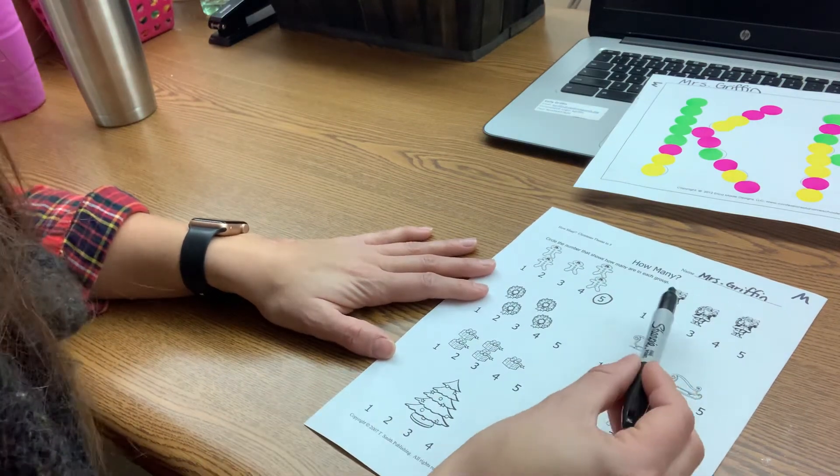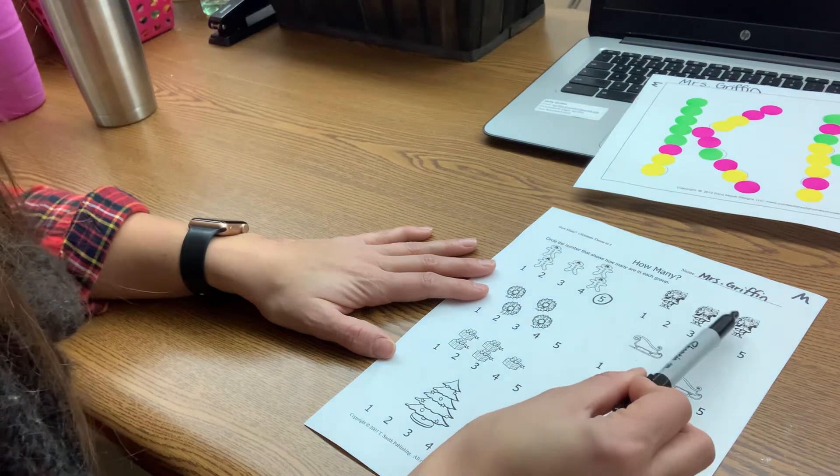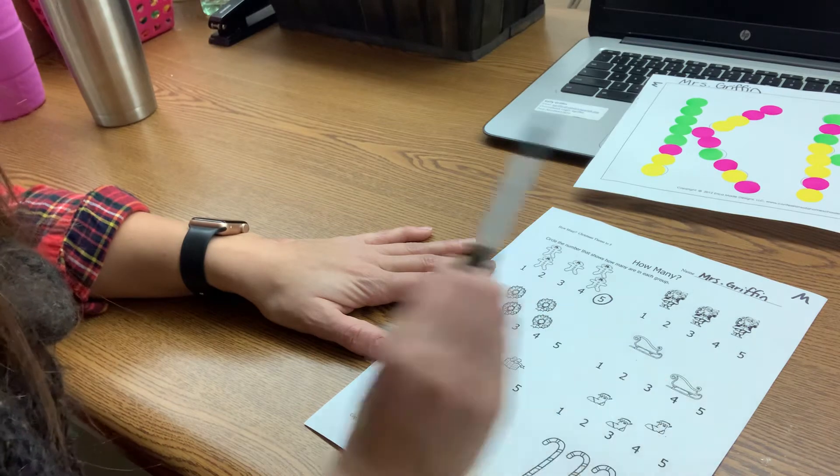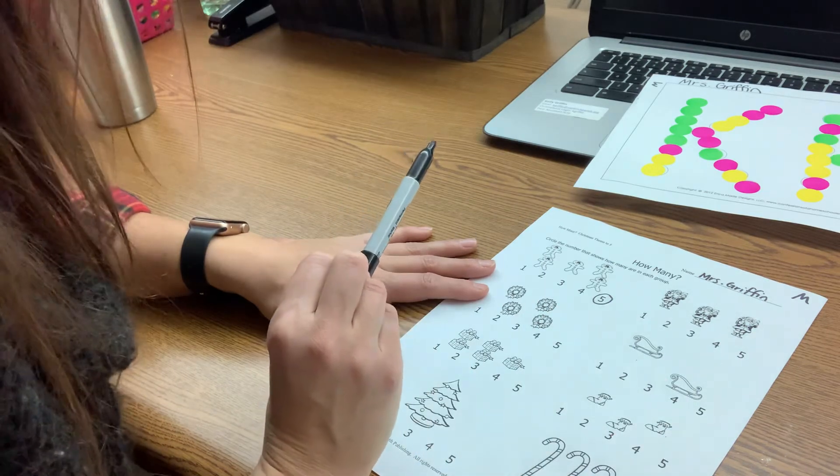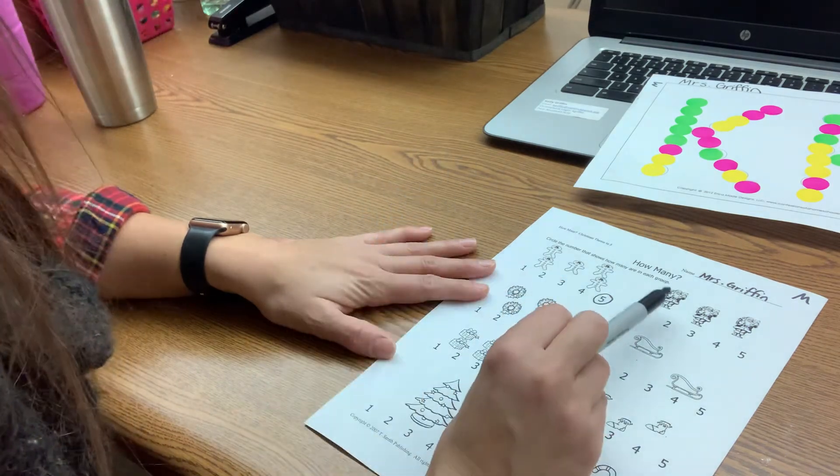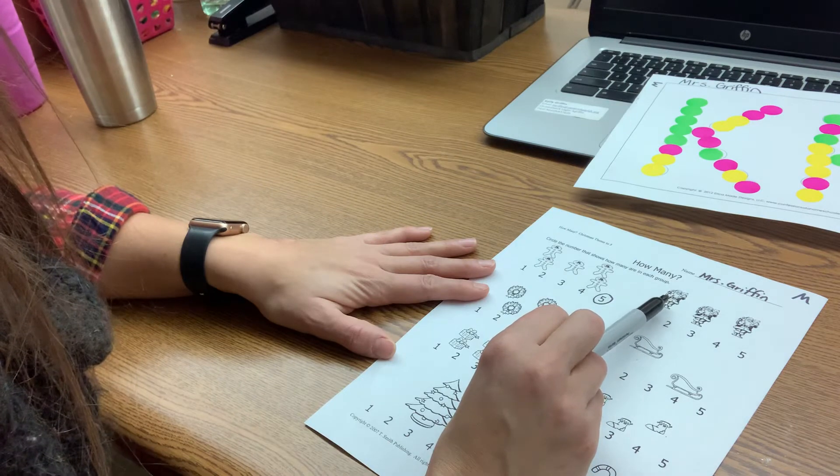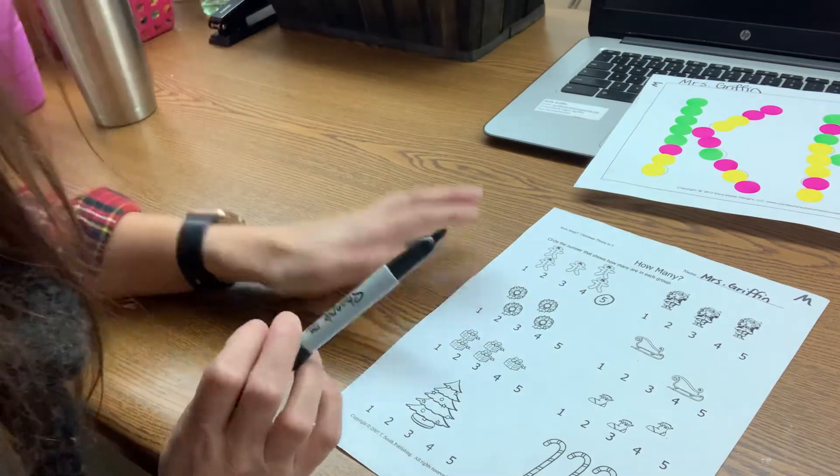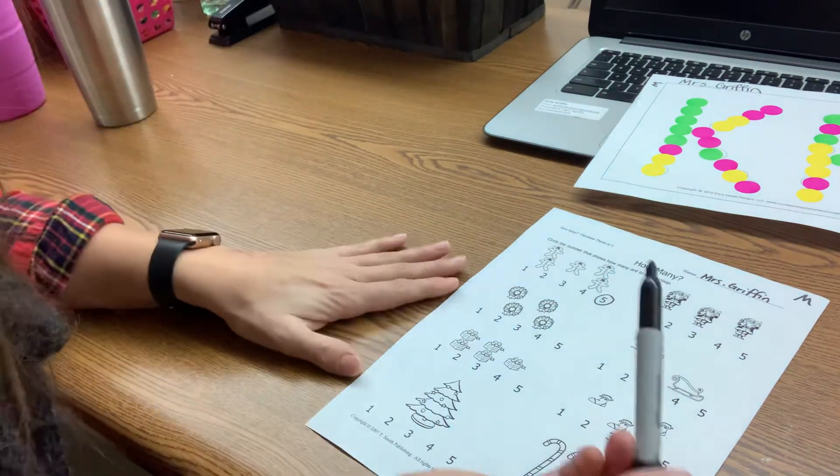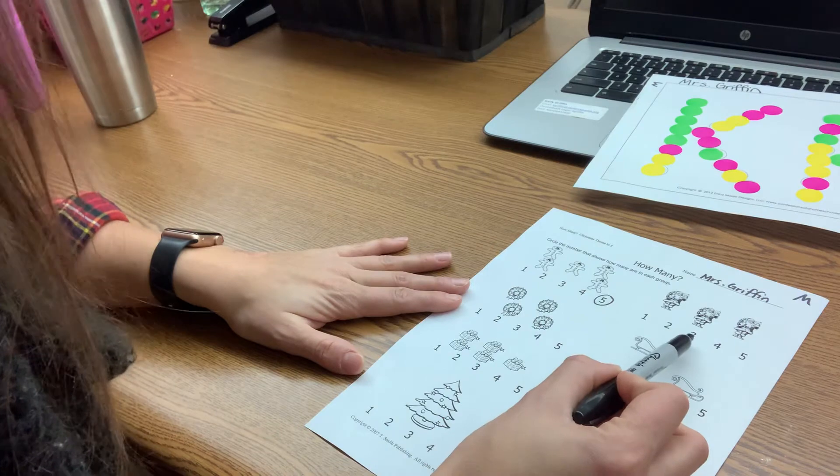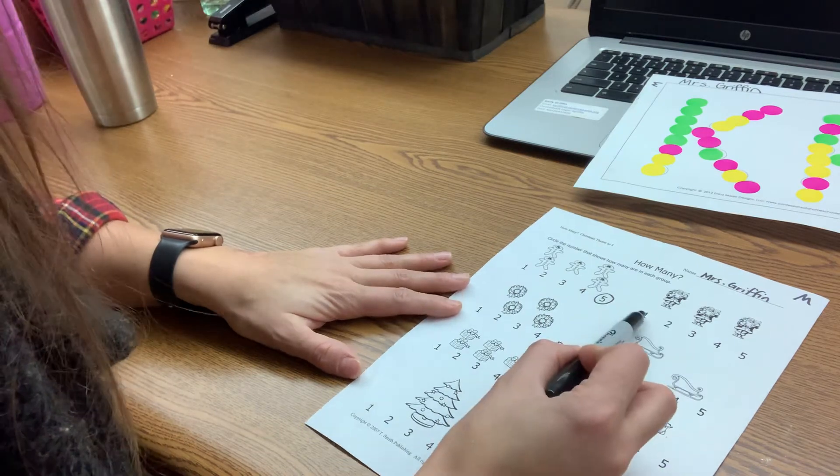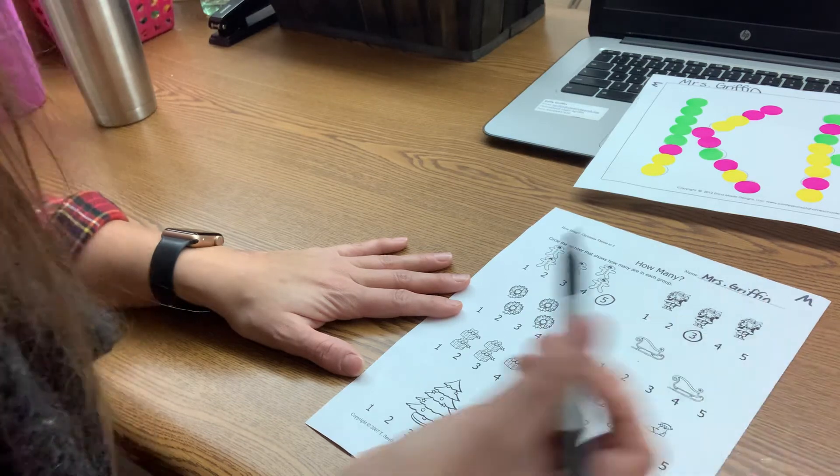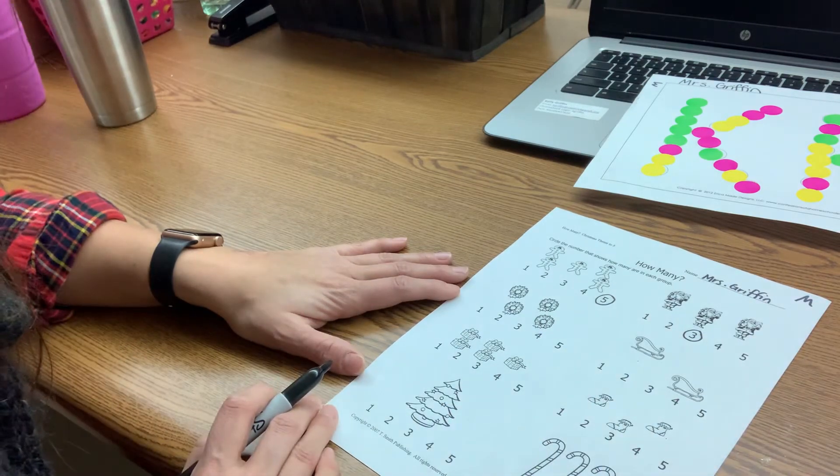Now we're going to move on to the Santas. How many Santa pictures do we see here? Can you count them? Shout it out when you know what it is. How many did you count? Did you say three? One, two, three. Very good. Can you find the three below? The three looks like half of a snowman, kind of. Here's one, here's two, here's three. So I'm going to circle it.